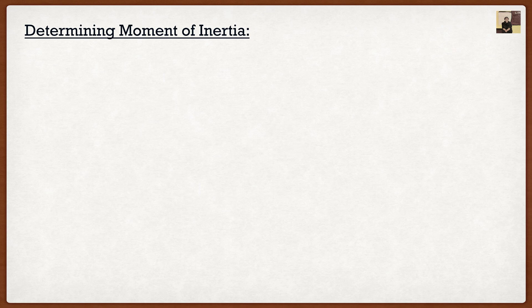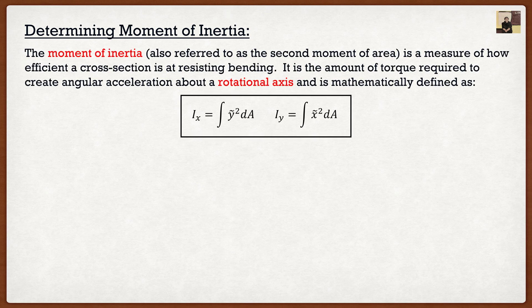Well, it's actually pretty simple. The moment of inertia, which it can also be referred to as the second moment of area, is basically a measure of how efficient a cross section is at resisting bending. Now, the formulas for them are actually quite simple. If I want the moment of inertia about the x axis, it's going to be the integral of y squiggle squared dA. And if I want the moment of inertia about the y axis, it's going to be the integral of x squiggle squared dA.